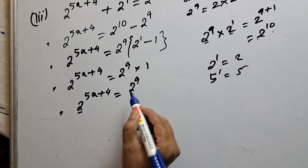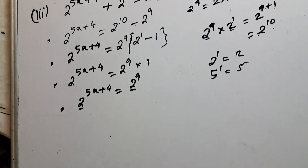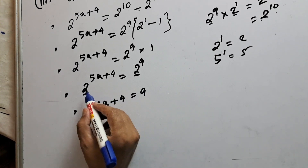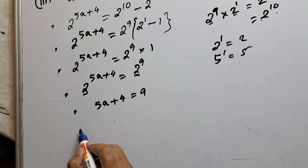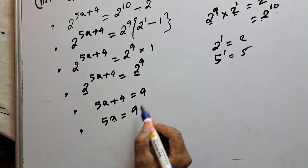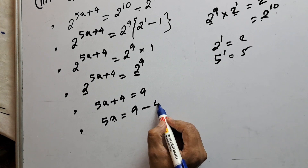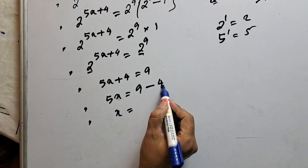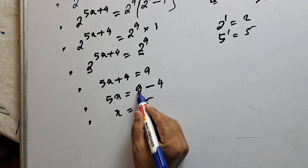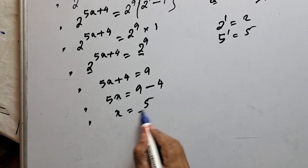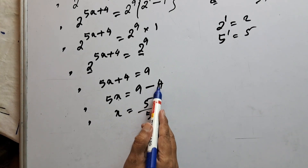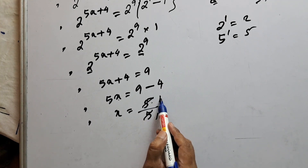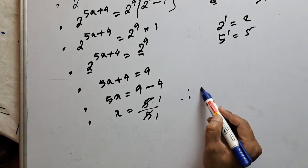When bases are equal their powers will also be equal, so 5x plus 4 equals 9. Taking 4 to the right hand side it becomes minus 4: 5x equals 9 minus 4, which is 5. Then x equals 5 over 5 — this 5 goes to the denominator by cross multiplication — so 5 ones are 5, and 5 over 5 is 1. Therefore x equals 1.